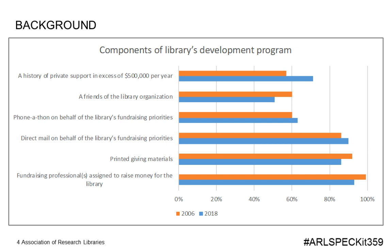When you look at the chart, the most noteworthy change over time was in a history of private support in excess of $500,000 per year, which increased 14% from 2006 to 2018. Another noteworthy change was a decrease in the number of Friends of the Library organizations. The rest of the components were either similarly distributed among respondents over time.